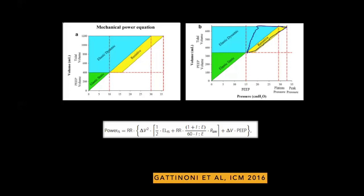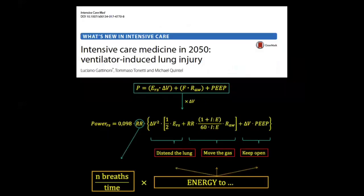To summarize the components of this power equation: it is the frequency at which energy is applied to the lung, the energy required to move gas through the conducting airways, the energy to distend the lung — the area under the pressure-volume curve — and an important third component: the energy required to keep the lung open, which is PEEP. PEEP can be both beneficial but can also incur some degree of harm if set inappropriately.